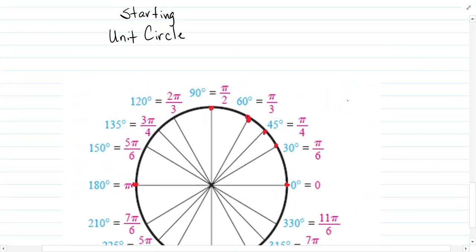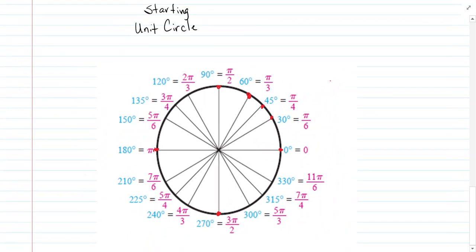We're going to begin to look at what's called the unit circle. The unit circle is our circle whose radius is equal to 1. And so when you break it apart, you have 30, 45, 60, 90.